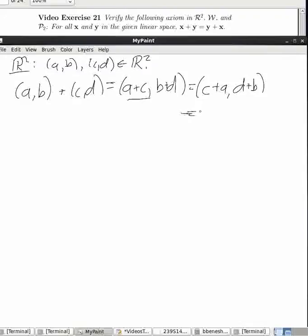Now I can use the definition of addition in R² in the opposite way. I can pull it apart into two different sums. And what I've shown is that AB plus CD is equal to that. Done.